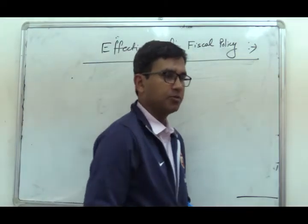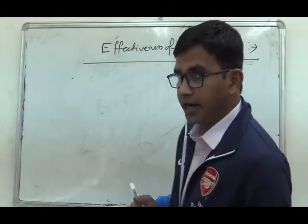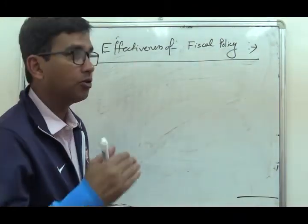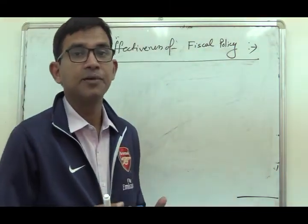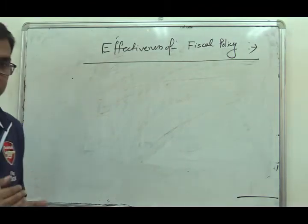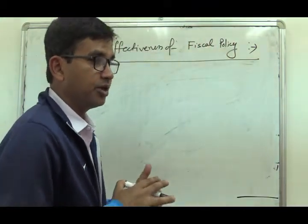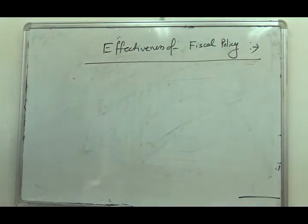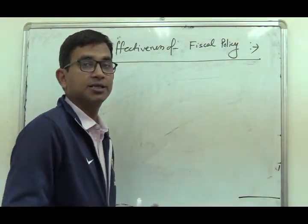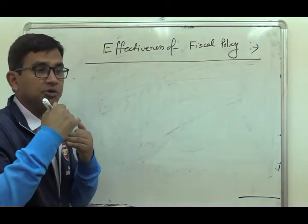Effectiveness of fiscal policy: why does the government adopt fiscal policy? This is basically an aggregate demand management policy. Fiscal policy and monetary policy are both instruments in the hands of the government to increase aggregate demand and solve the problem of shortage of effective demand. Today we will discuss under which conditions fiscal policy will be more effective, so we have to consider the mechanism of how fiscal policy boosts aggregate demand.